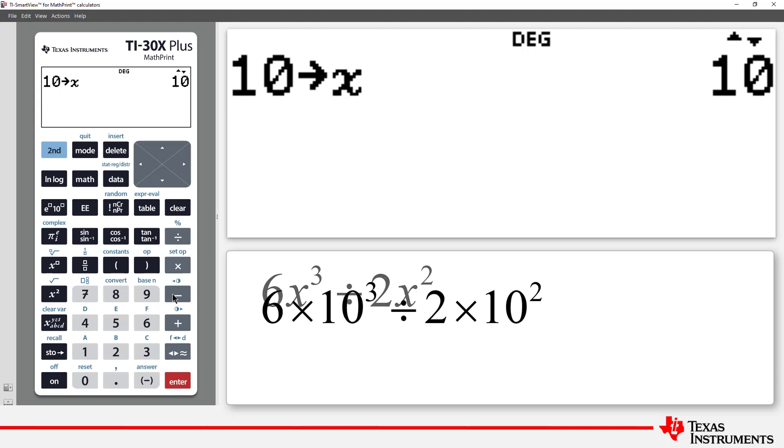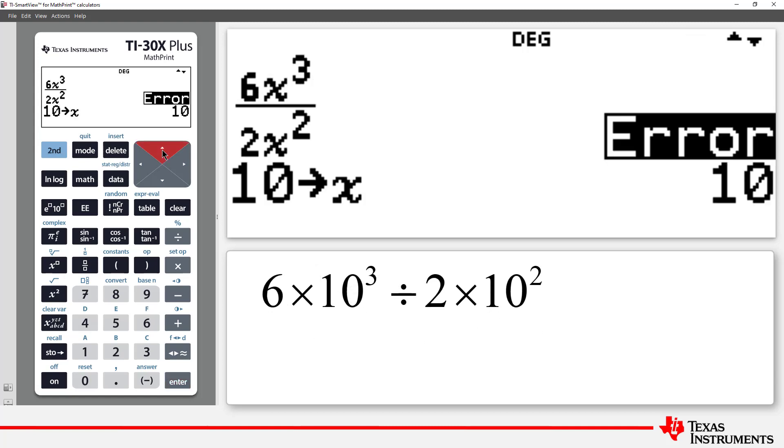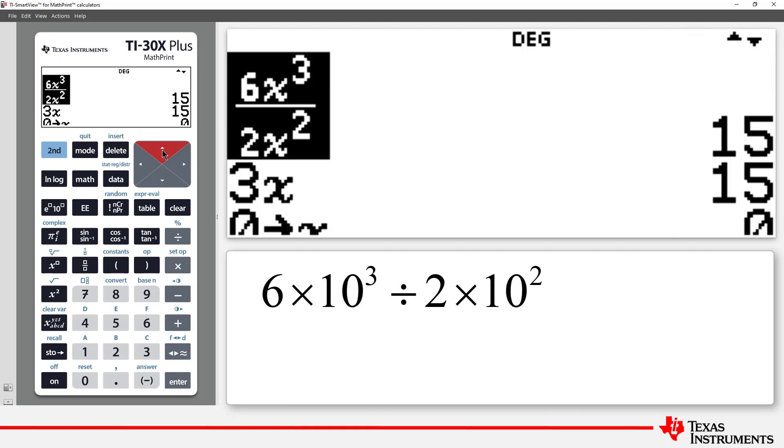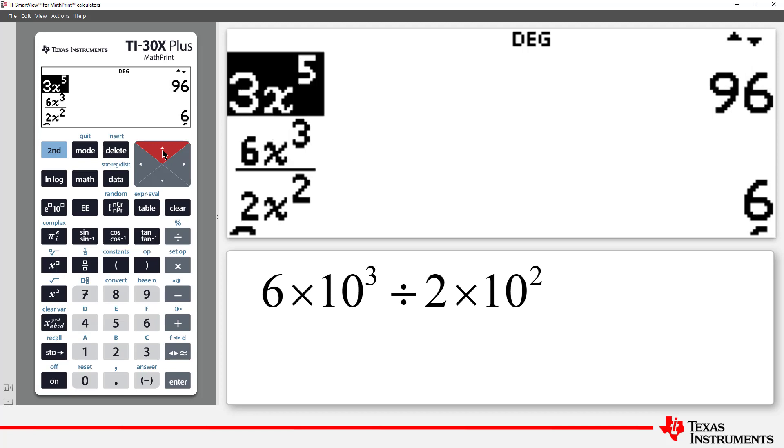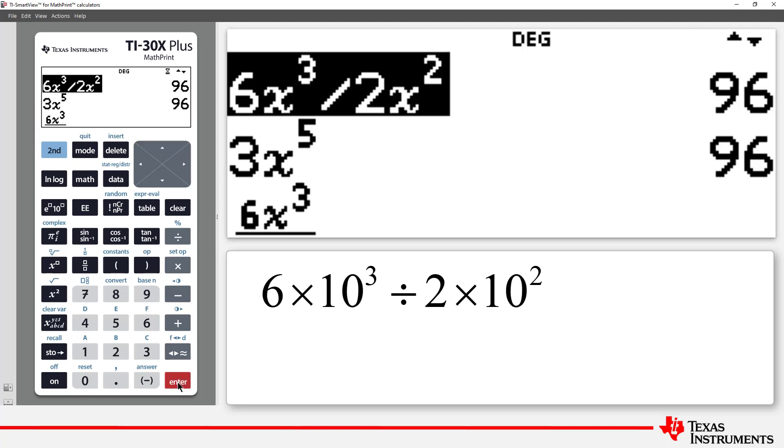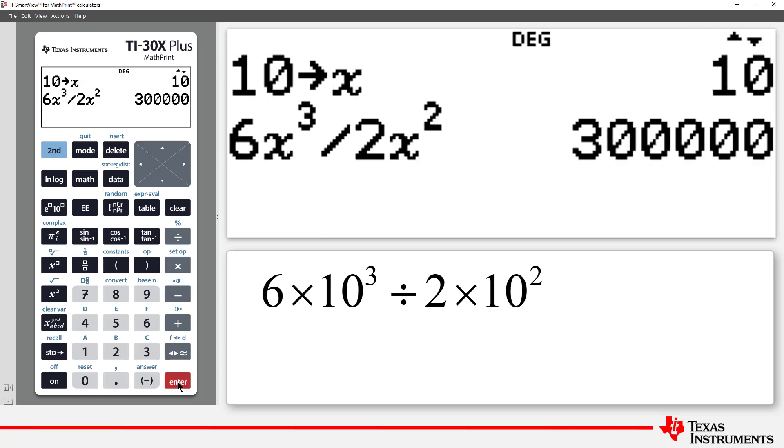But if you arrived at this expression wanting to divide 6,000 by 200, our earlier explorations tell us that you need to put parentheses around the 2x squared. Otherwise, the order of operations will compute the exponents first, then multiplication and division from left to right, to arrive at 300,000, which is very different than dividing 6,000 by 200.